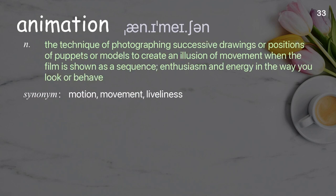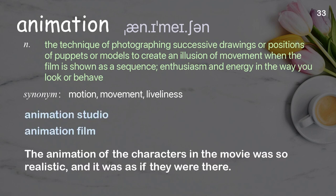Animation: the technique of photographing successive drawings or positions of puppets or models to create an illusion of movement when the film is shown as a sequence; enthusiasm and energy in the way you look or behave. Examples: animation studio, animation film. The animation of the characters in the movie was so realistic, it was as if they were there.